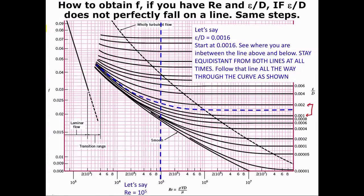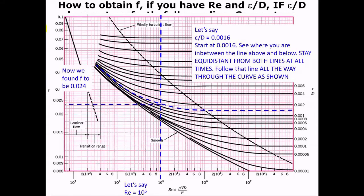What you're going to do is stay equidistant from both lines at all times, and you're still going to follow the curve. So you can see I'm following the curve. And then once you intersect with your Reynolds number, you're going to draw again that straight line to the left, and you're going to get your friction factor, which is about 0.024.